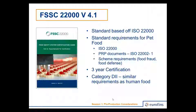FSSC 22000, version 4.1, is based off of ISO 22000. For pet food, there is a specific category, which is D2. But essentially, both BRC and FSSC treat pet food just like human food in the standard — there are no unique or separate activities or requirements. The 22002-1 prerequisite program requirement applies along with the ISO 22000 and FSSC requirements.